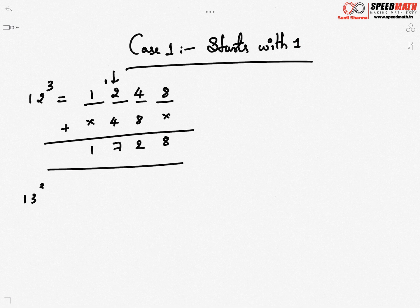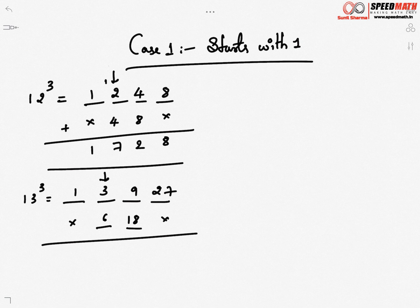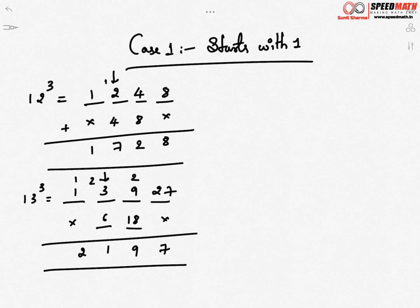Let's take one more example: 13³. Again four positions — first two positions are 1 and 3. Third position: 3² = 9. Last position: 3³ = 27. Step 2: leave first and last, double the middle — 3 doubled is 6, 9 doubled is 18. Step 3: add everything, taking only the units digit and carrying forward the tens. From 27 take 7, carry 2; 18 + 2 = 20, 20 + 9 = 29, carry 2; 3 + 6 + 2 = 11, carry 1; 1 + 1 = 2. So 13³ = 2197.